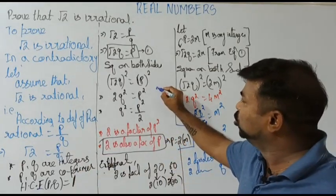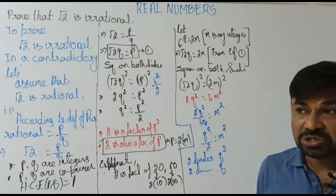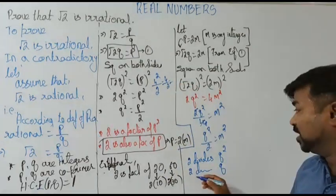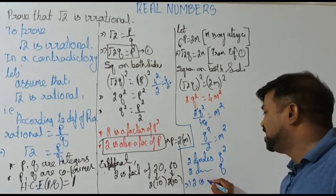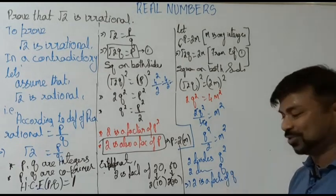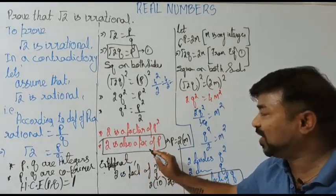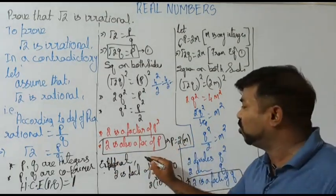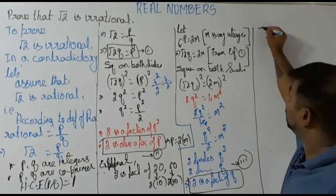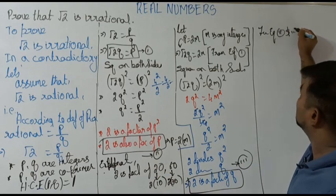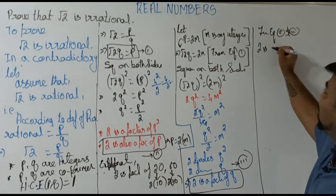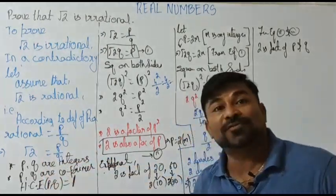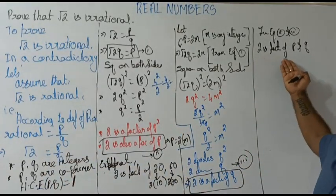When 2 divides q², 2 also divides q. For example, 2 divides 4² = 16, and 2 also divides 4. In the same way, 2 divides q² implies 2 divides q. So 2 is a factor of q. Call this equation 2 and equation 3. From equations 2 and 3: 2 is a factor of both p and q.